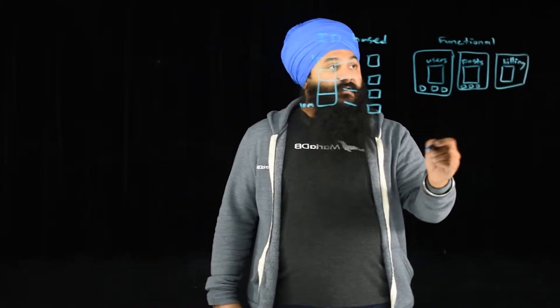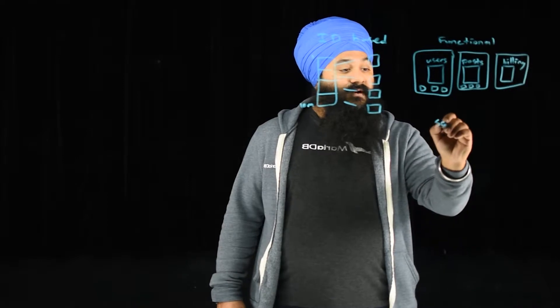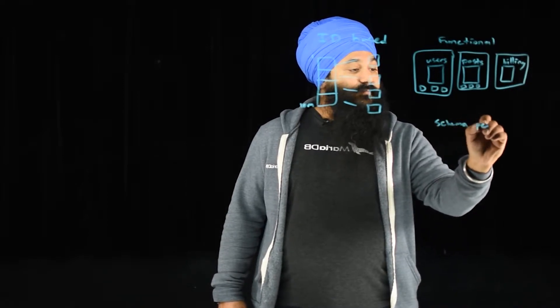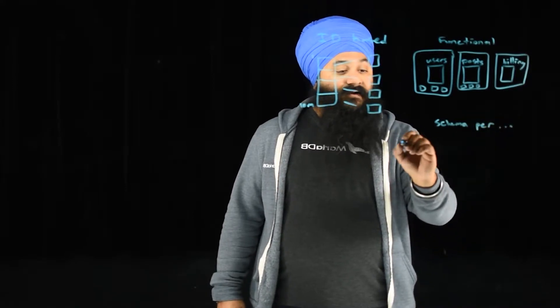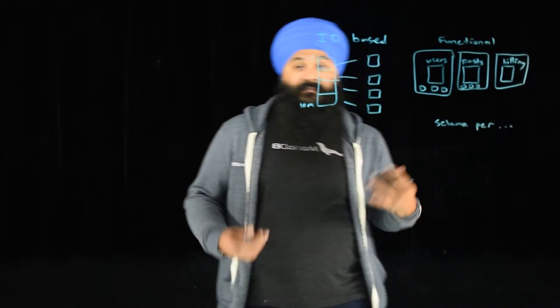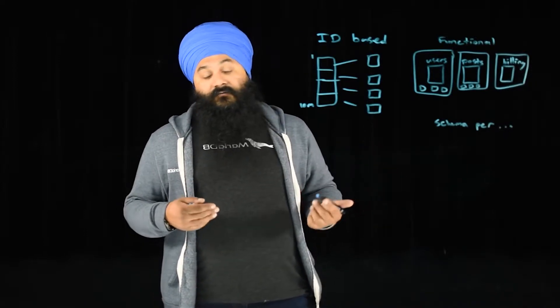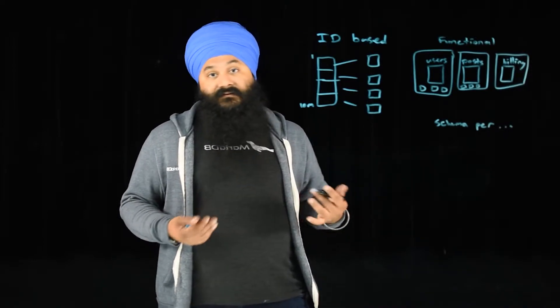Now, the third one is sometimes called schema per customer or schema per function, schema per anything really. And this is where you have a database. So let's say you're a web hosting company. And each of your domains for that company has a database associated with it.